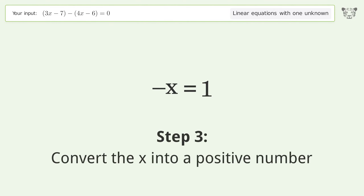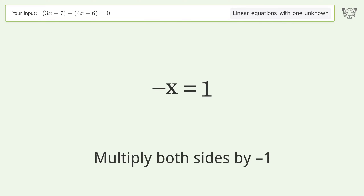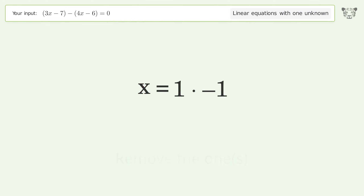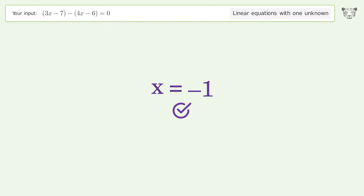Convert the x into a positive number by multiplying both sides by negative one. Remove the ones, and so the final result is x equals negative one.